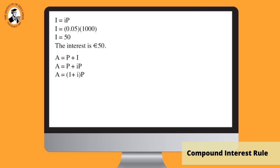So in general, A is equal to P plus I. The amount is the principal plus the interest. Then, writing the interest as IP, we get A is equal to P plus IP. Taking P out as a common factor and placing it at the end, we get A is equal to, in brackets, 1 plus I times P.